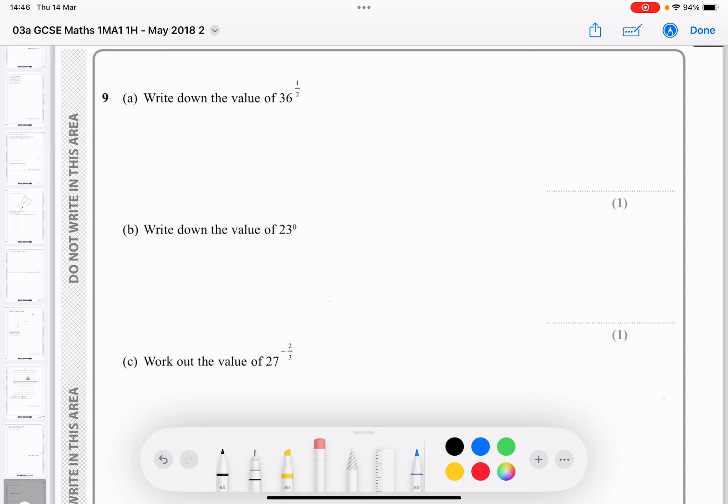First of all, we've got the power of a half. Let's remember that the power of a half is just square root. So in this case, the square root of 36 equals 6.